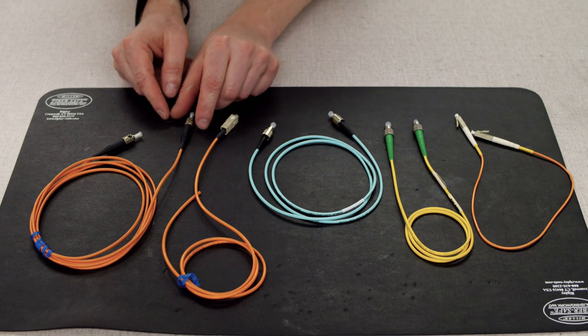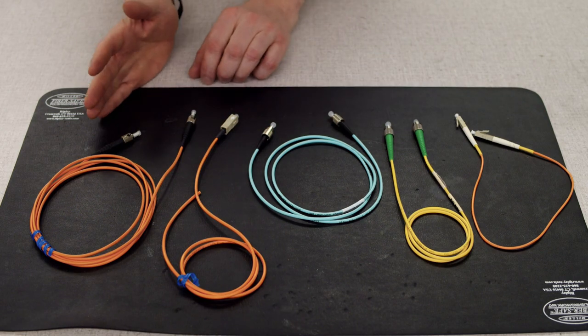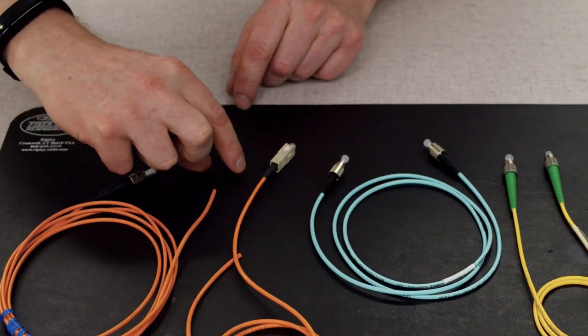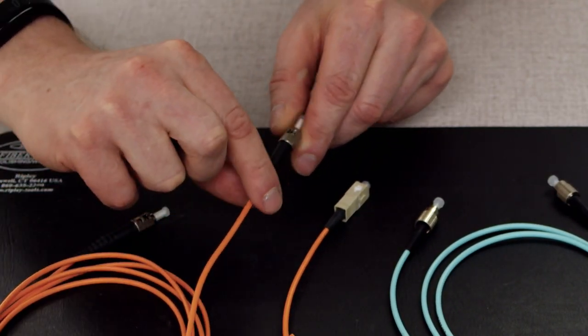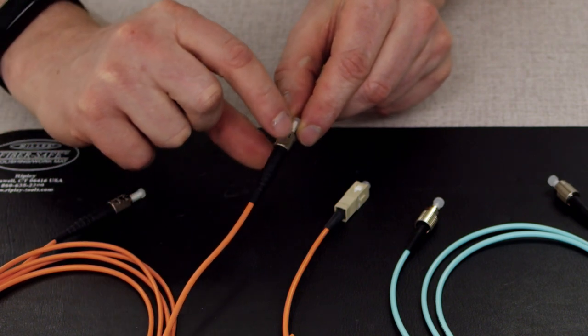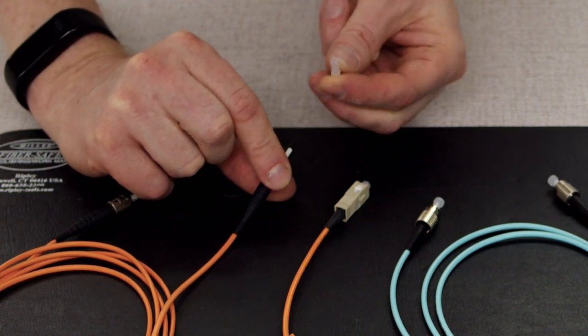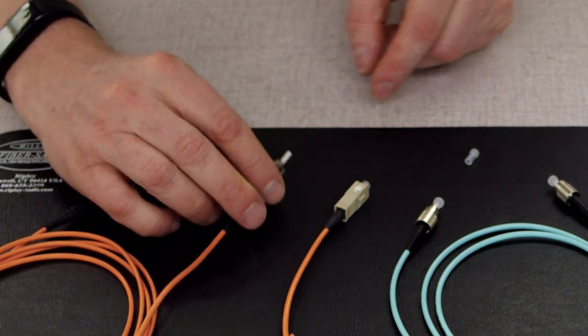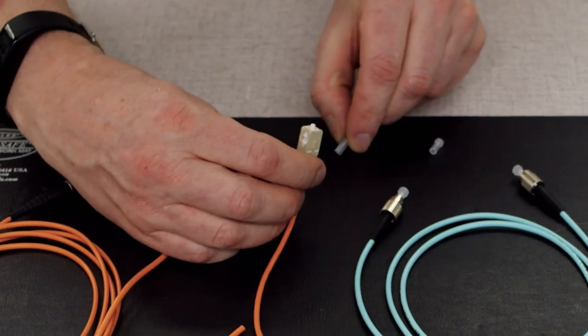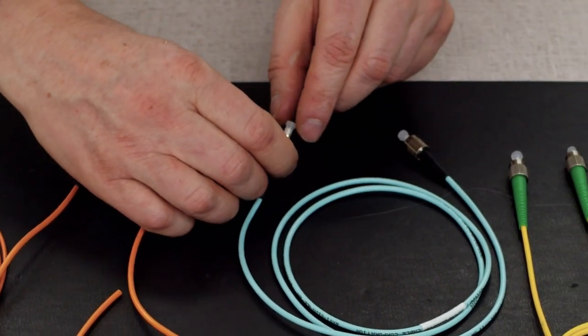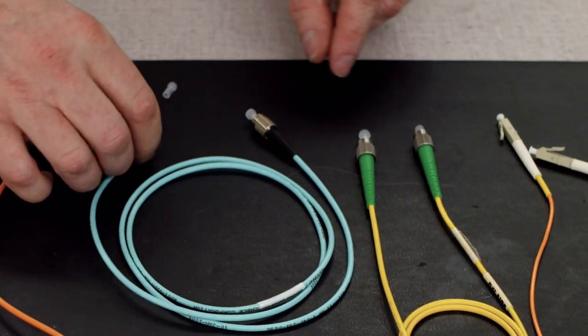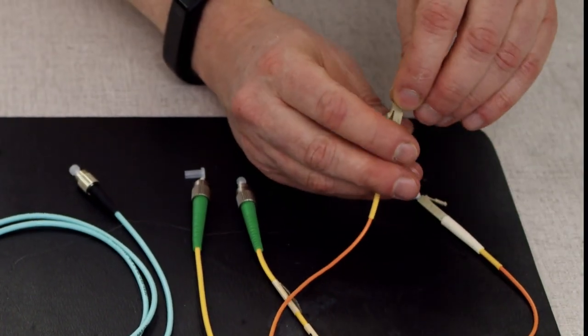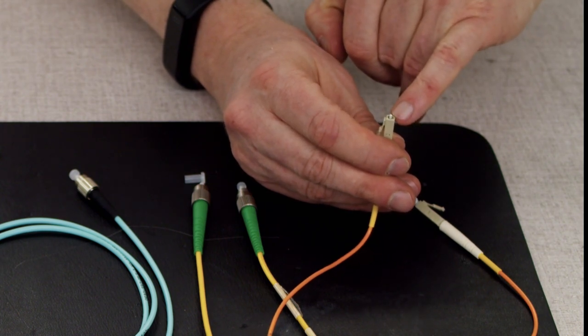So while all of these probably look different to each other, they all have the basic same components. They all have the cable going into some kind of strain relief boot, they have a connector body, we have a dust cap on the end, and a ceramic ferrule. So all of them are the same. Body, ceramic ferrule sticking out. Ceramic ferrule sticking out, ceramic ferrule sticking out, little tiny ceramic ferrule sticking out.